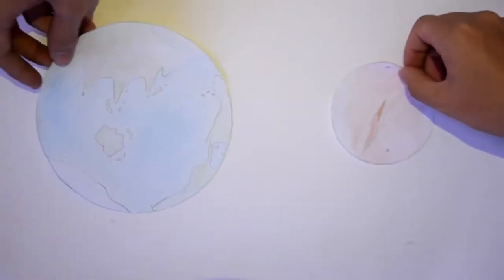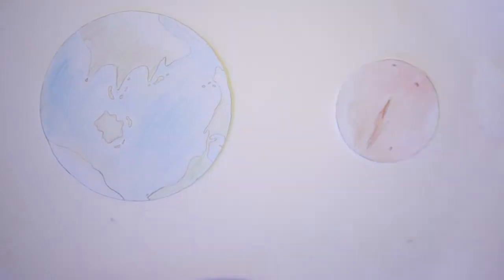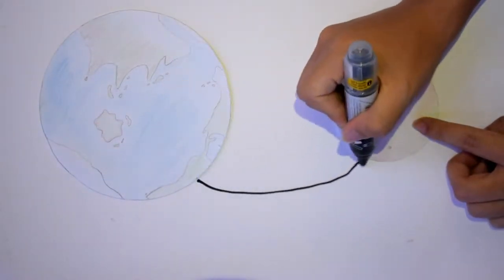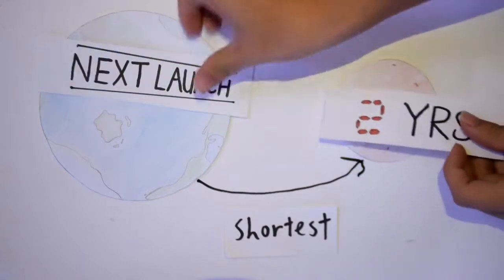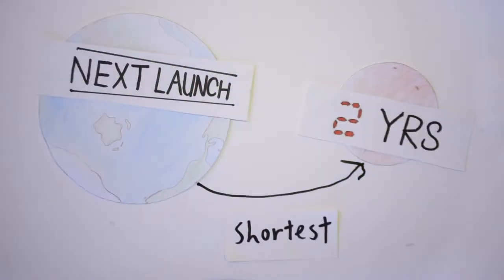However, the timing of launch is also important. So to save energy and time, the distance of path needs to be the shortest and this only happens about once every two years, due to the orbit of Earth and Mars.